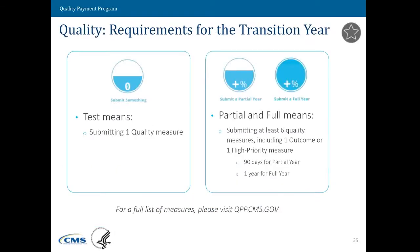Let's move on to slide 35. What does this mean within the context of the Pick Your Pace? Under Pick Your Pace, test for quality would be submitting one quality measure, and partial and full could mean submitting six quality measures with one outcome or one high priority. In all instances, it doesn't mean that you have to do six quality measures. If you find that you are able to do three or four measures, we would encourage you to do that.